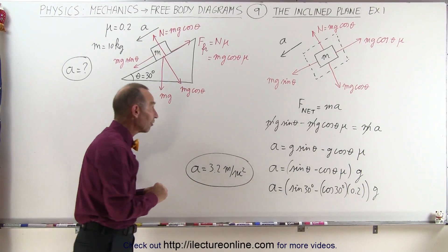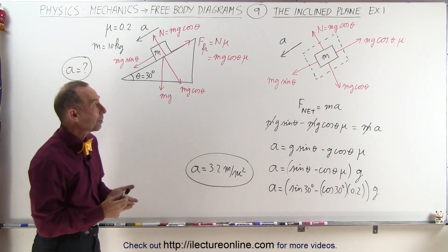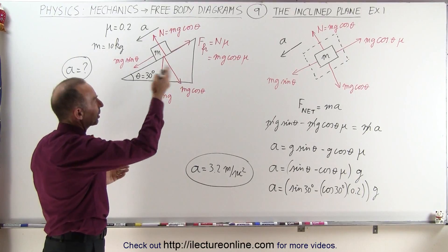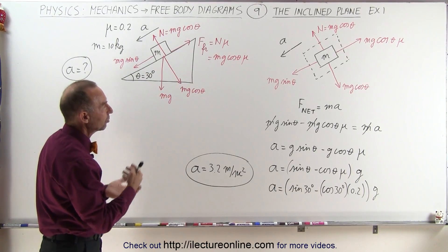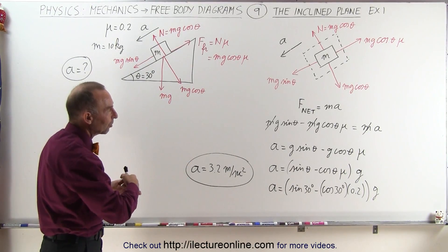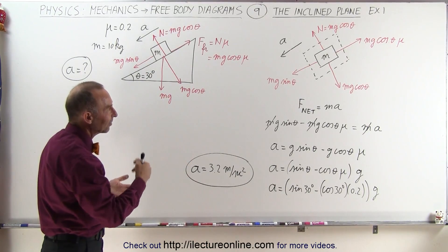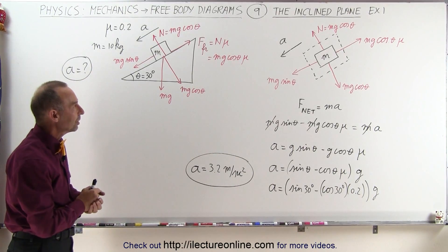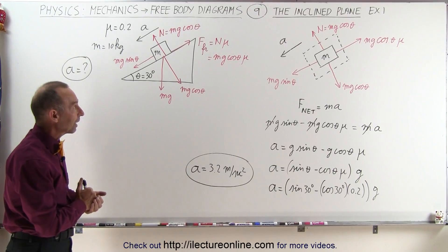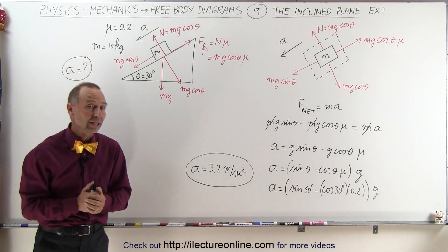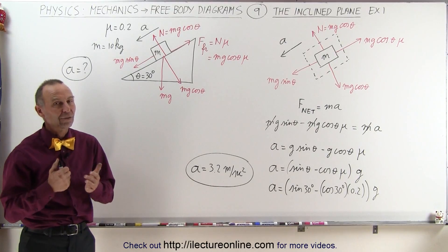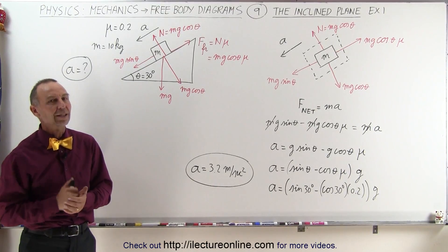You can see that the free body diagram can be set up so that the acceleration has a particular direction, and you only consider the forces that are either opposing or aiding the acceleration. That's how we do it with an inclined plane and just one object. In the next video we'll have two objects on the inclined plane, which will be a little different.